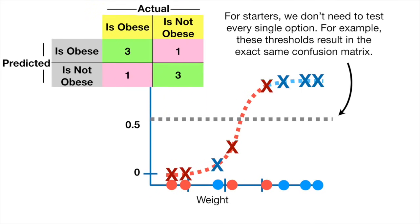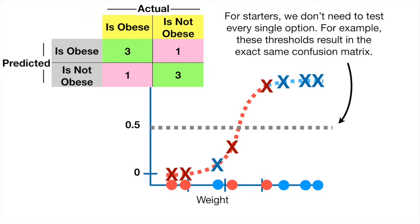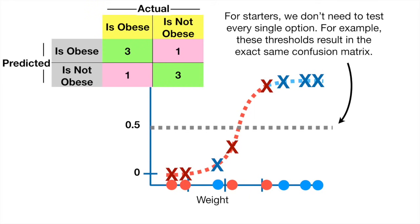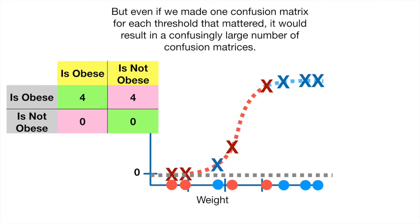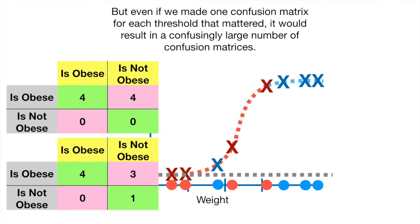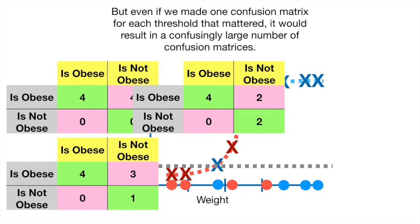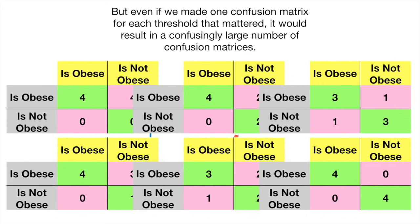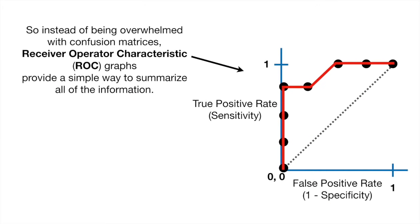We don't need to test every single option, since some thresholds result in the exact same confusion matrix. But even making one confusion matrix for each threshold that mattered would result in a confusingly large number of confusion matrices. So instead, Receiver Operator Characteristic graphs provide a simple way to summarize all of that information.